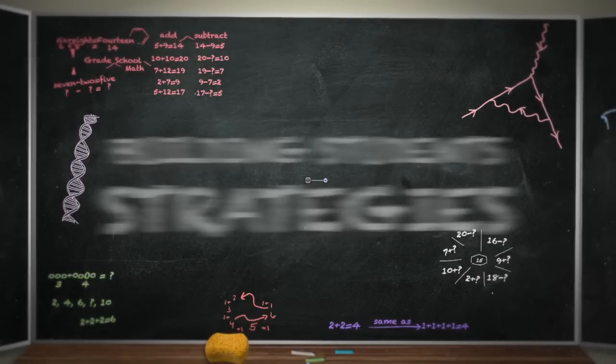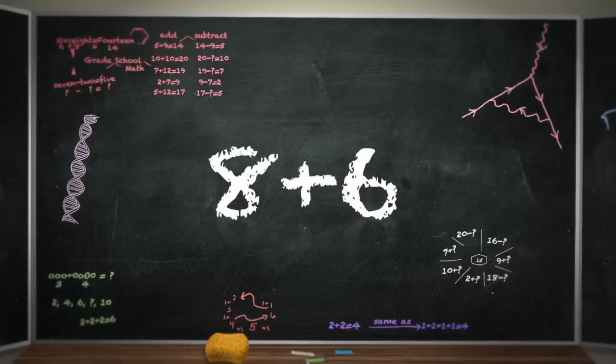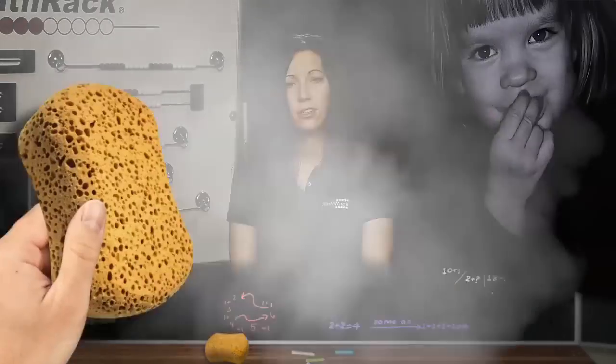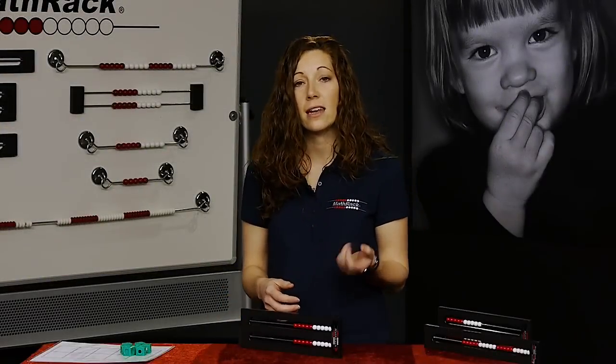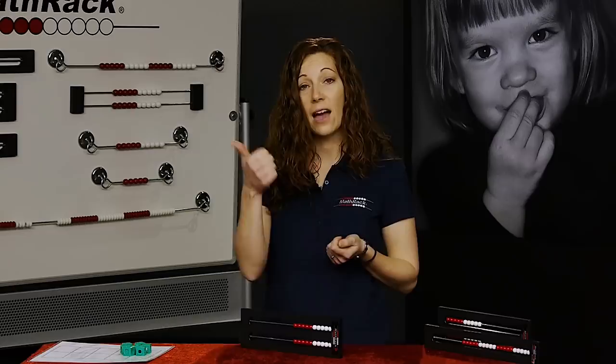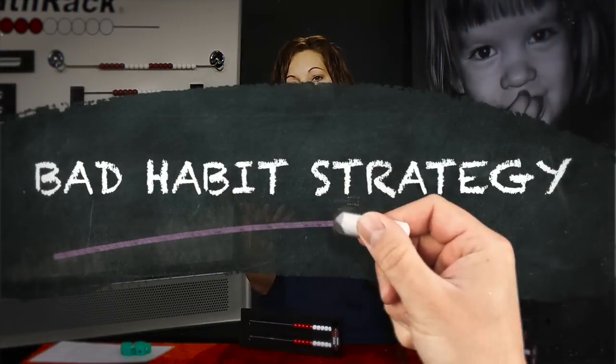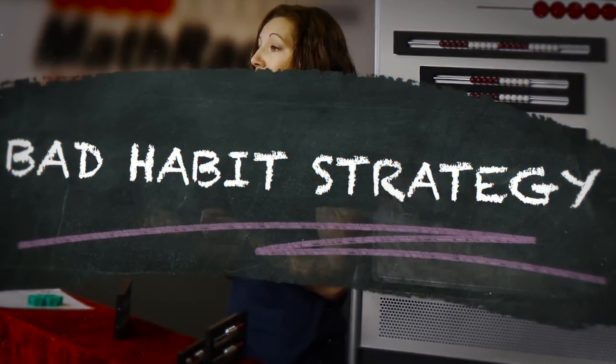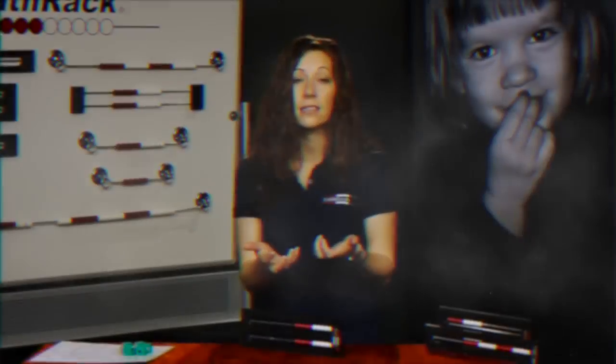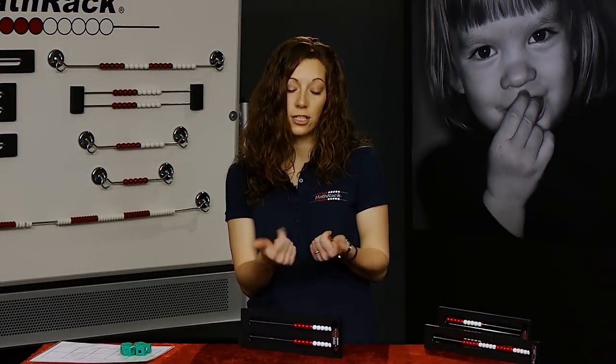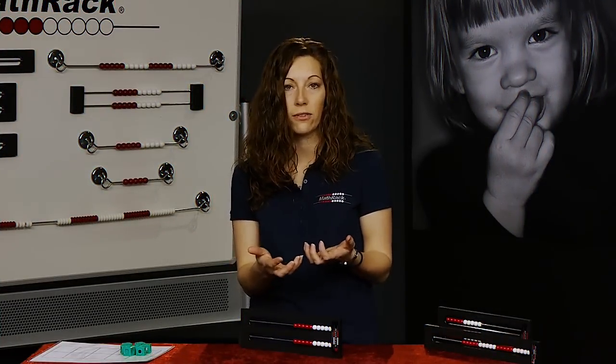So if we have the numbers eight plus six, what kids tend to do when they first start to learn how to do addition is that they would count out eight cubes, they'd count out six cubes, and then they'd push them all together and they have to re-count all of those cubes. One of the things that they start to do as they progress then is to be able to hold the eight in their head and then they count on the six to get up to the fourteen. This is a strategy, unfortunately, that kids still in middle school get stuck with. If they can't remember what eight plus six is, they start doing that just to double check really quickly and they can't get past using their fingers.